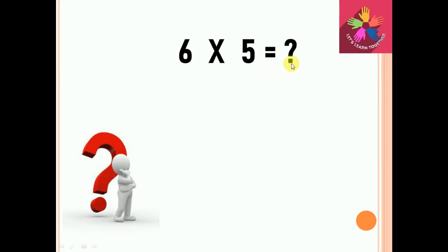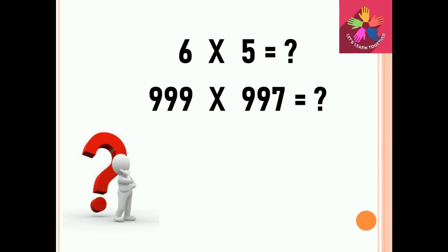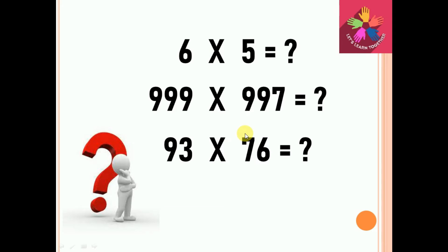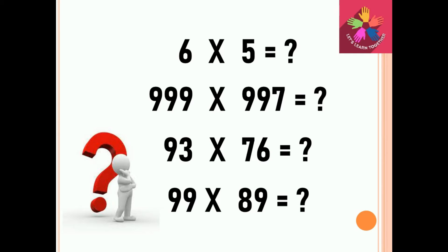In this video we will see how to multiply two numbers like 6 into 5. Some people think you just learn the 6 or 5 times table — those tables are all about memorizing. But what if the numbers are like 399 into 997, or 93 into 76, or 99 into 89? If you don't know the tables, how do we find the result in 2 seconds?